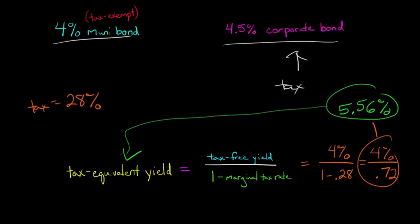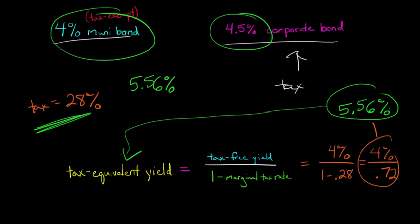That's our tax-equivalent yield. What does this mean? The 5.56% means that the 4% tax-free return on the municipal bond is equivalent to a normal bond that is not tax-exempt with a rate of 5.56%. Since 5.56% is greater than 4.5%, in this case, given your tax bracket, it's better to be invested in the 4% municipal bond than the 4.5% corporate bond.